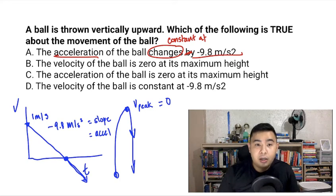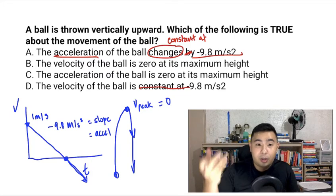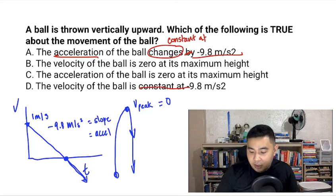Therefore, choice D is also incorrect because the velocity of the ball changes by negative 9.8 meters per second squared. So you actually interchanged the two choices.